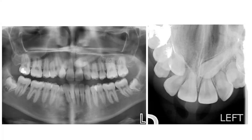To localize canines using the vertical shift rule, you standardize the canines according to their vertical position. On the OPG, I identify the tip of the canine and measure its distance from the root apex of the central incisor, or from the cementoenamel junction, neighboring teeth, or the alveolar ridge. In this case, the tip of the canine is in the middle third of the central incisor root.